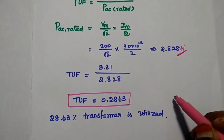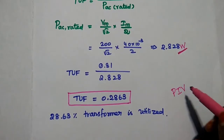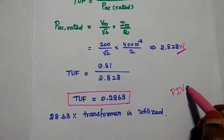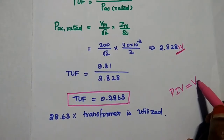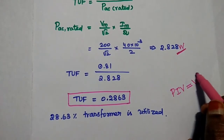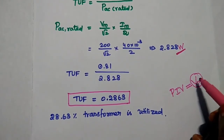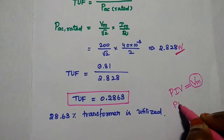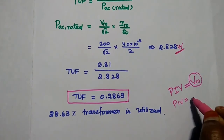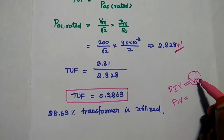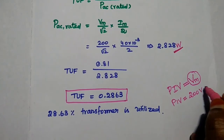Finally, the peak inverse voltage is the maximum reverse voltage, which equals the maximum input voltage. For this problem, the peak inverse voltage is 200 V.